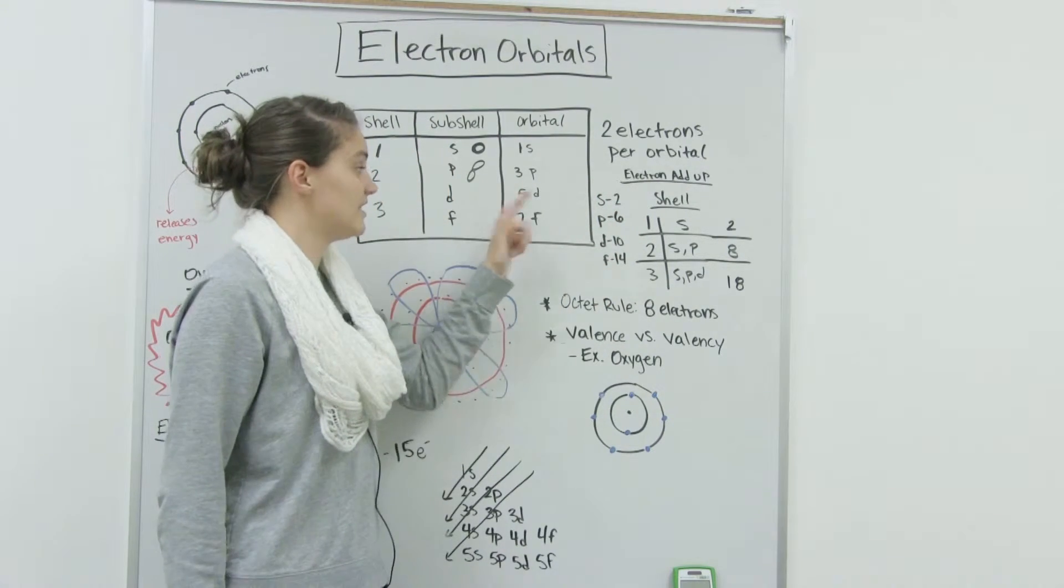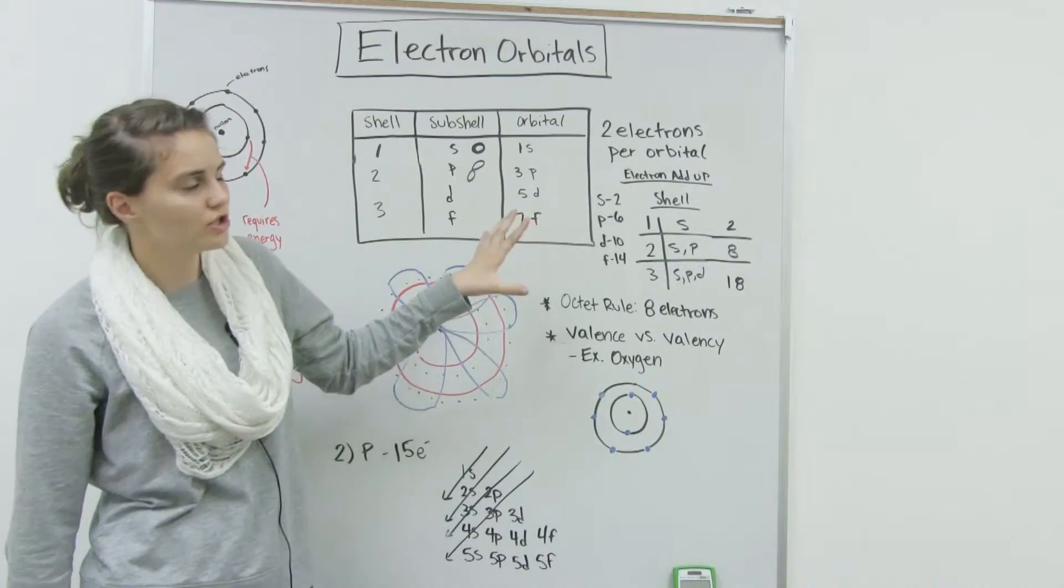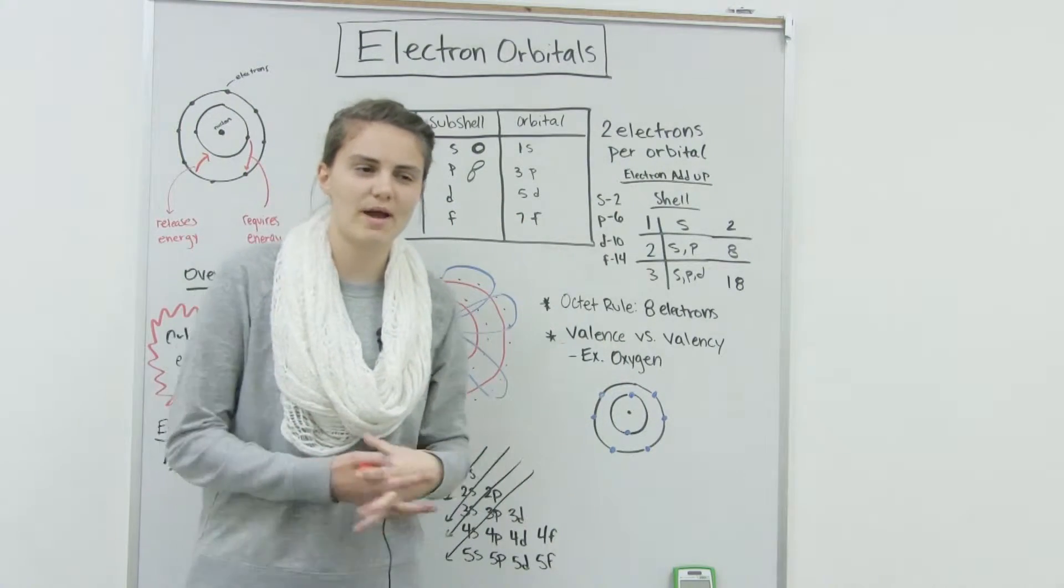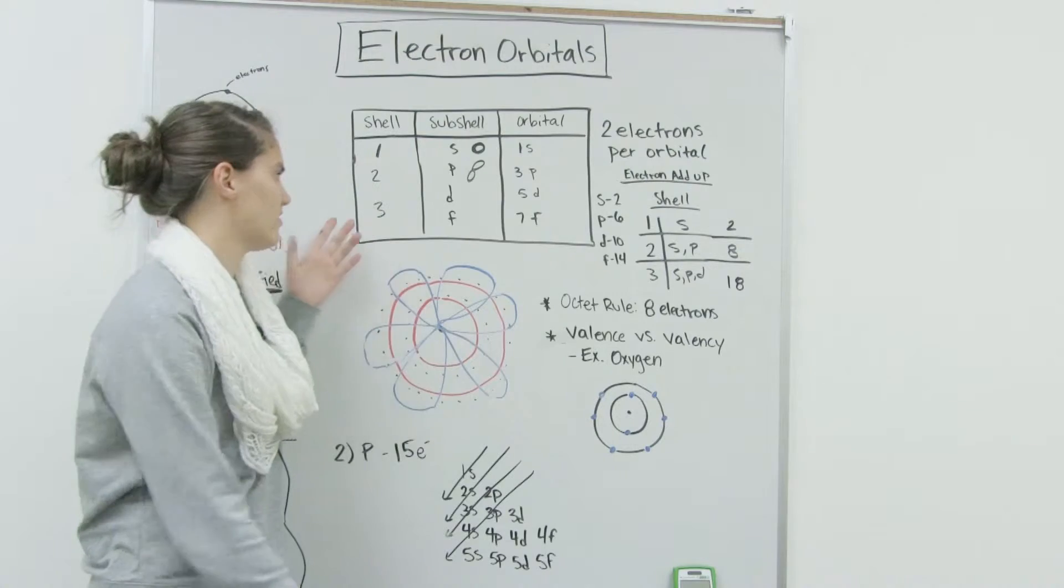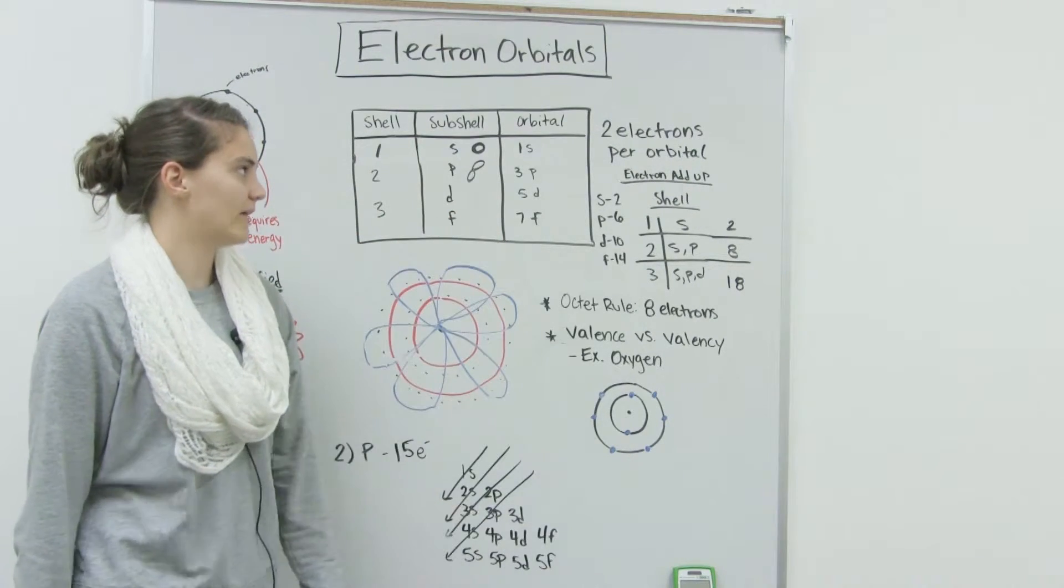D10, F14. And don't get too concerned about D and F because for the majority of biology, we're not going to get much more than the third shell and much more into D's and F's.